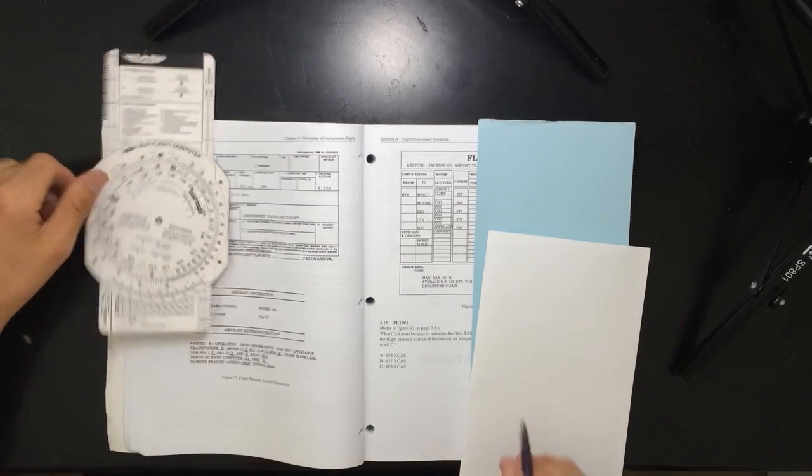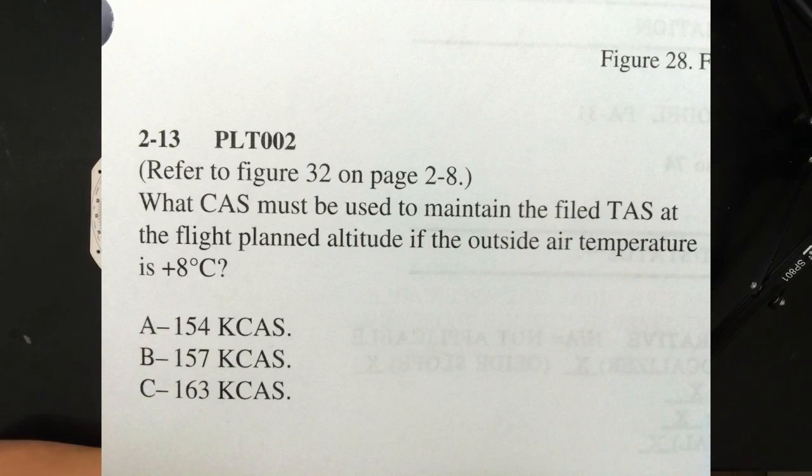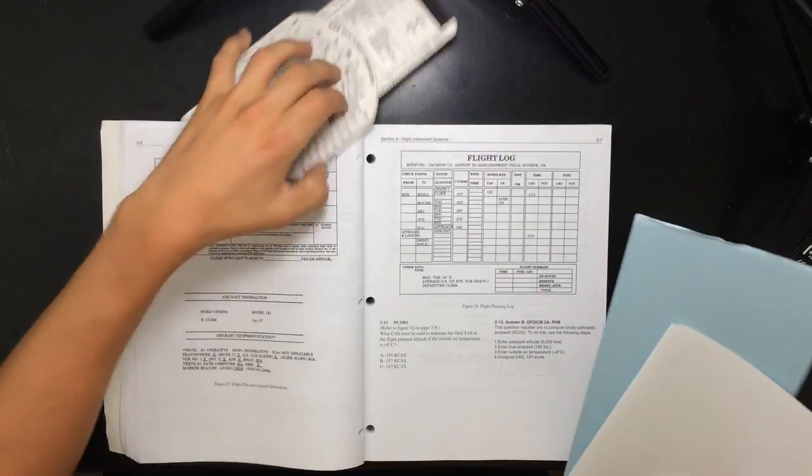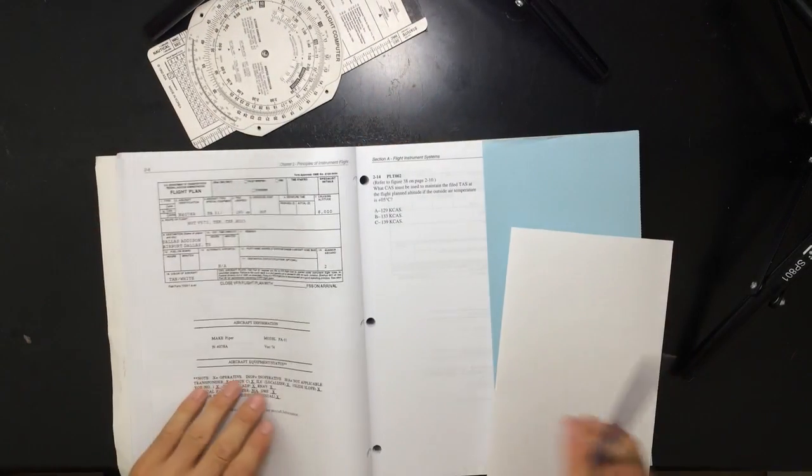So the first question here is, what calibrated airspeed must be used to maintain the filed true airspeed at the flight planned altitude if the outside air temperature is plus 8 degrees Celsius? So they say use figure 32 on page 28. So we're going to go ahead and go to page 28 here.